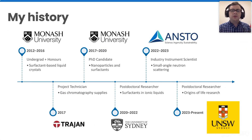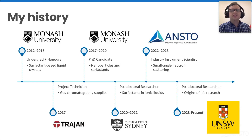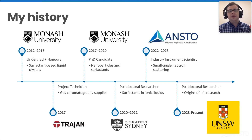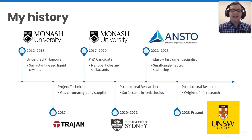A bit about myself: I finished my undergraduate honors degree at Monash University with a double major in chemistry and a minor in physics, so physical chemistry is where I've always been. Following that, I spent some time in industry making gas chromatography supplies before returning for my PhD, where I looked at the interplay of metals and surfactants. Following that, I was set to do an international postdoc, but it was April 2020, so that didn't happen, and I made the long trip from Melbourne to Sydney.